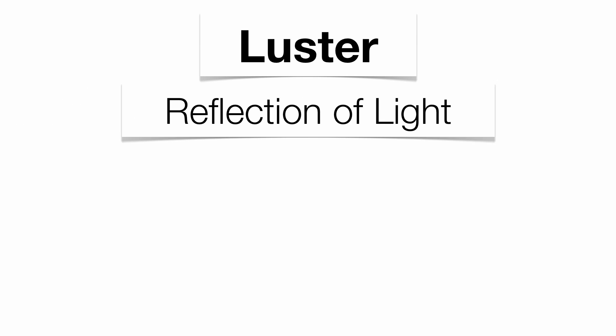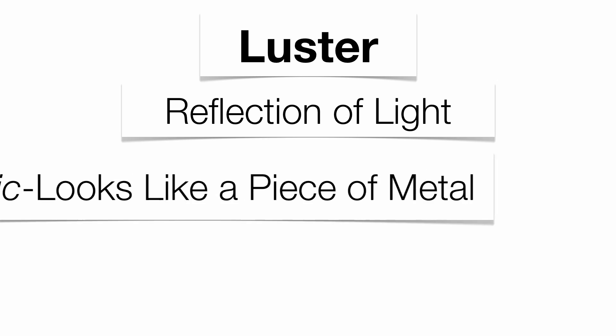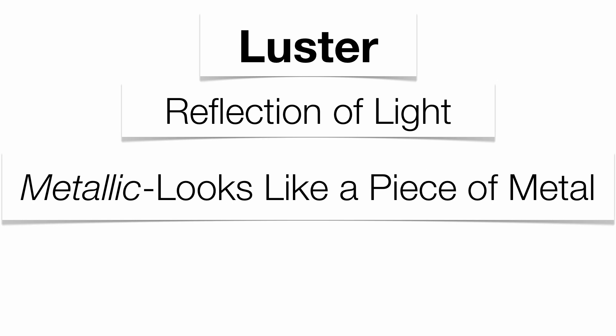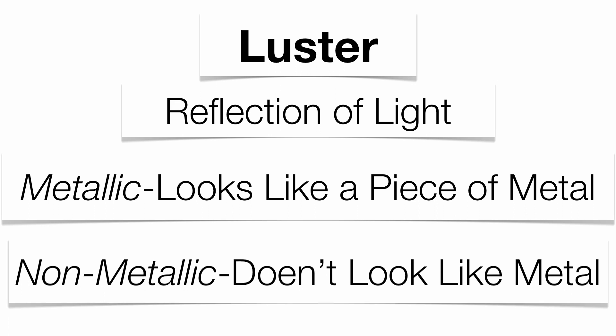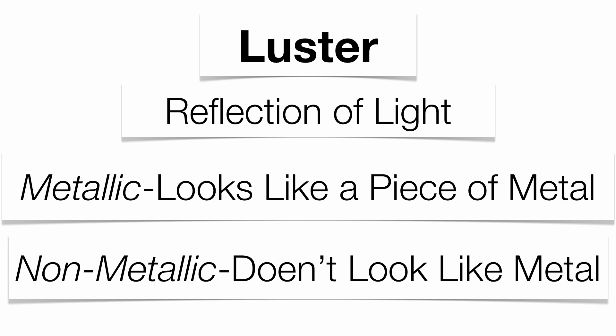Luster is just the way that light is reflected off the surface of a mineral. You have either metallic — if it looks like a piece of metal, it's going to be metallic — or non-metallic, meaning it doesn't look like a piece of metal.